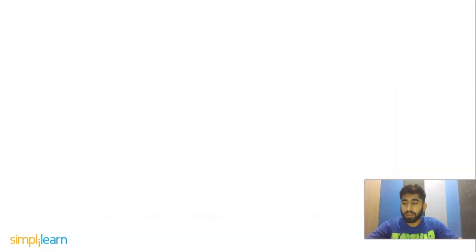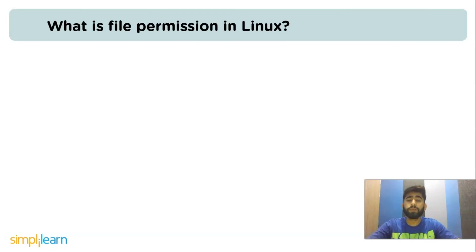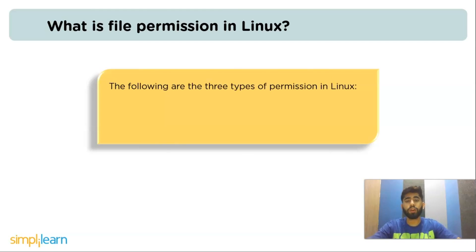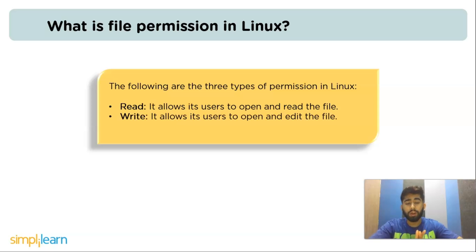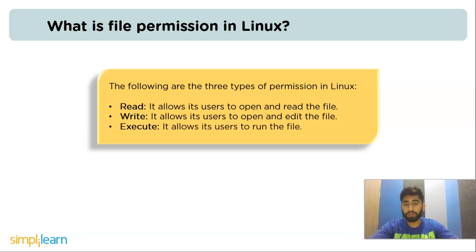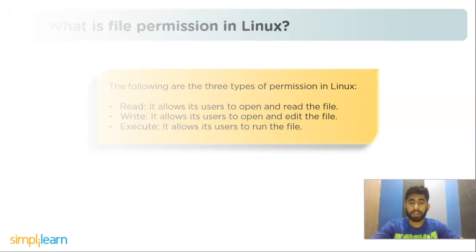The next question is: what is file permission in Linux? There are three types of permission in Linux. The first one is read — it allows the user to open and read the file. The next one is write — it allows the user to open and edit the file. The third one is execute — it allows the user to run the file.